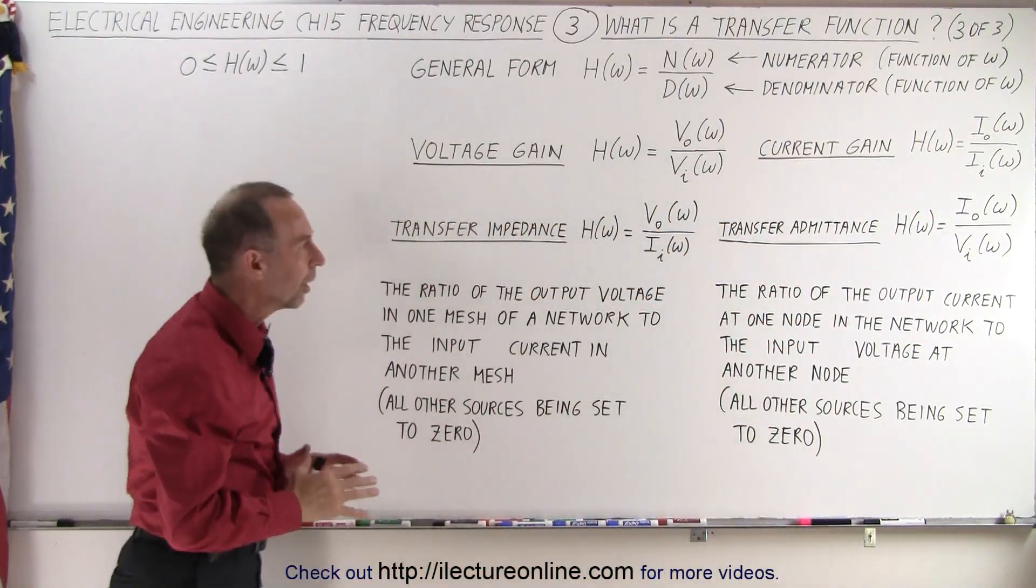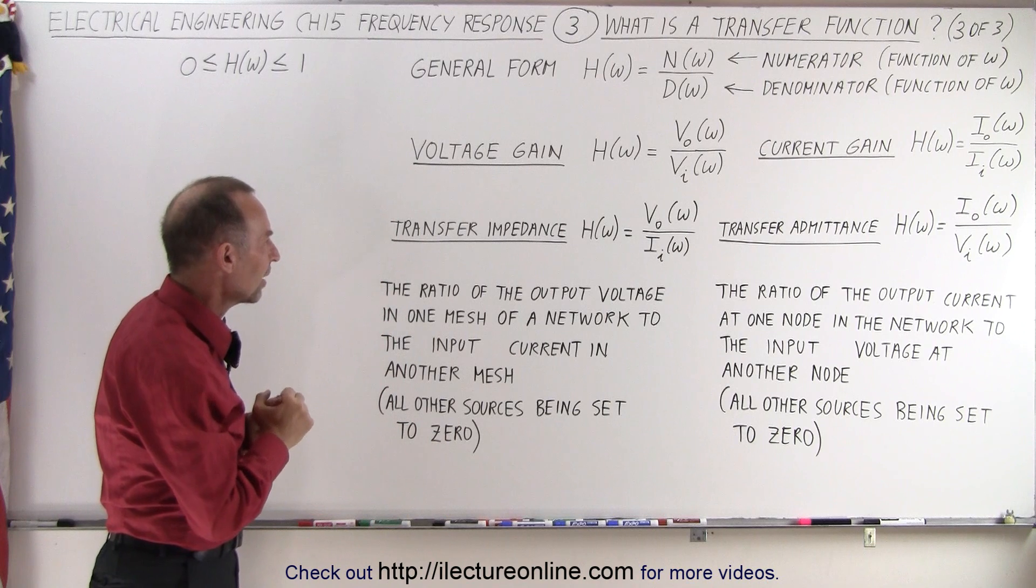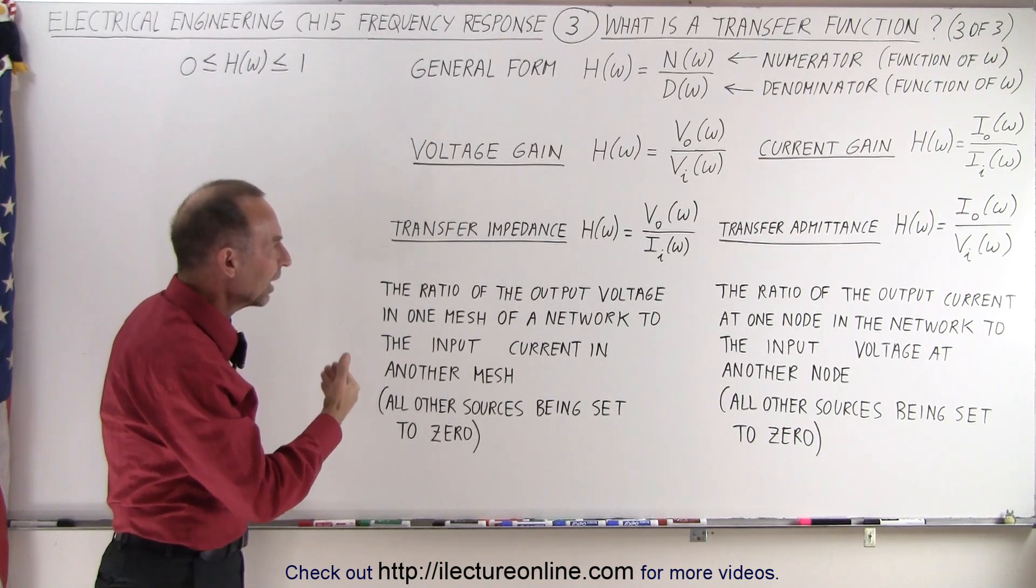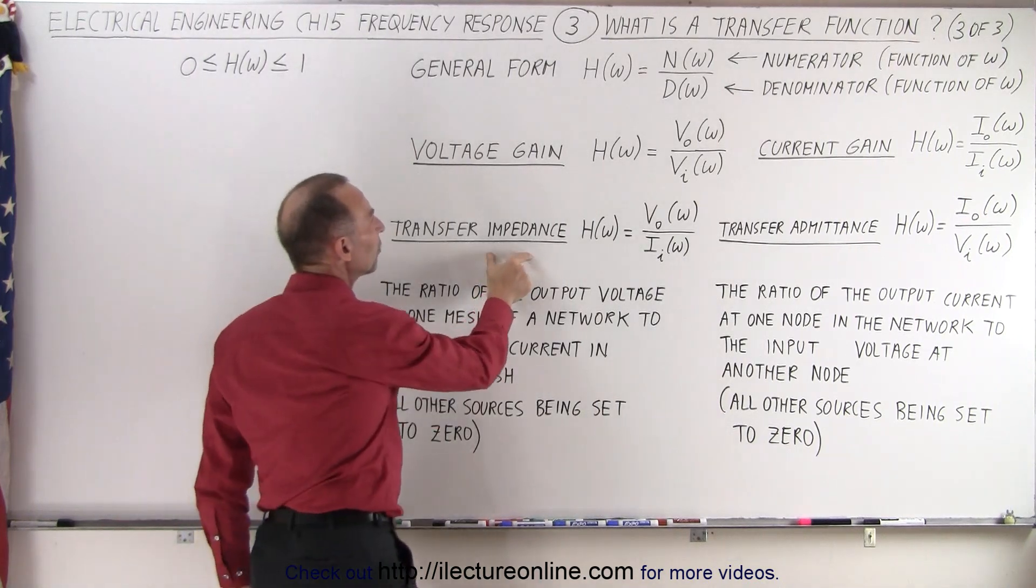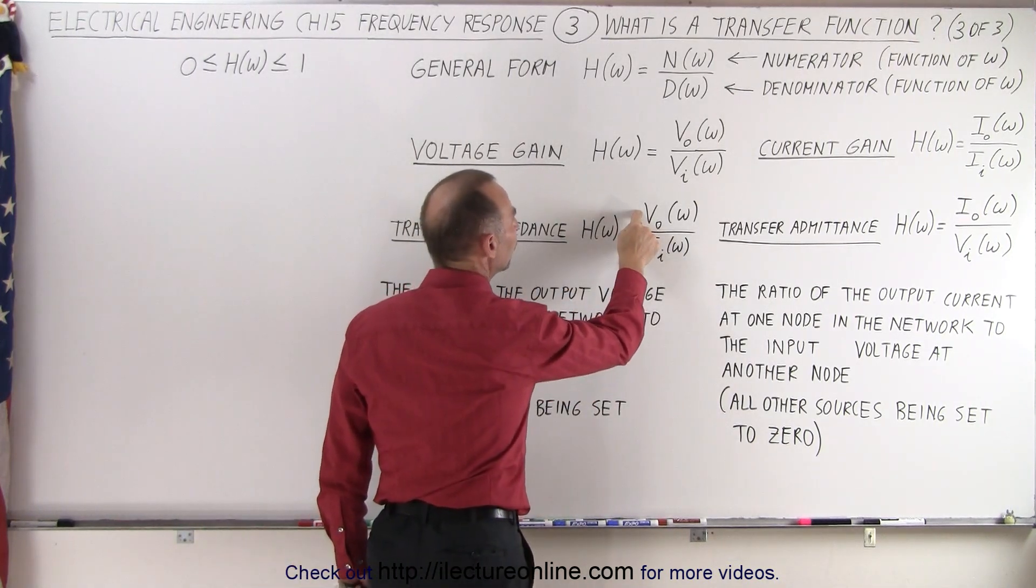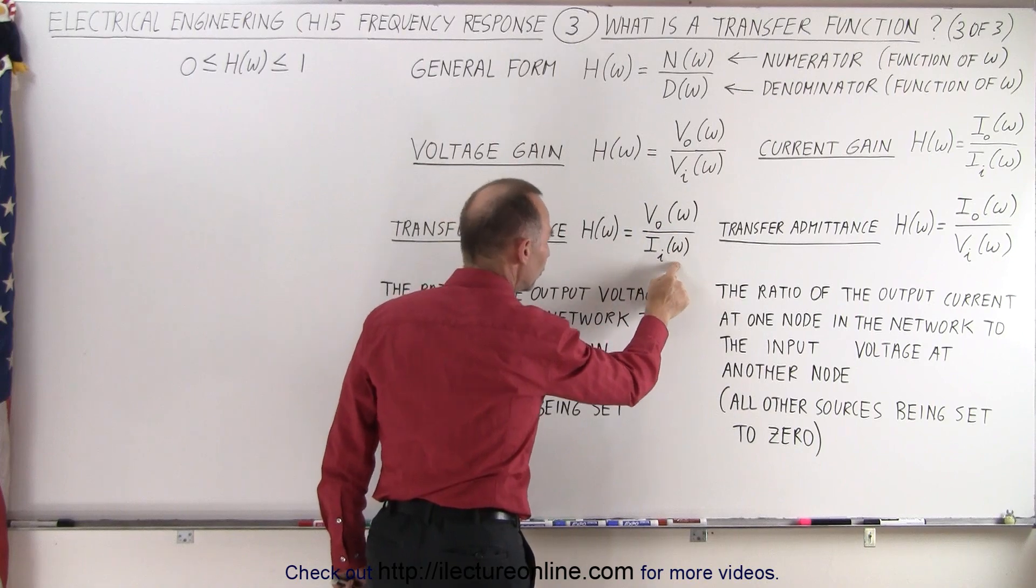Now, the other two are a little bit more difficult to understand. The transfer impedance and the transfer admittance, what are they? Well, it turns out that the transfer impedance is the ratio of an output voltage caused by an input current.